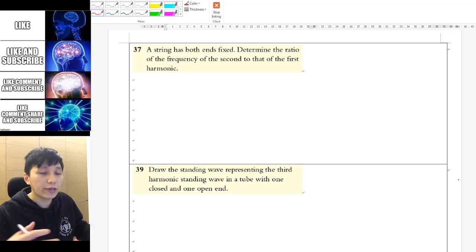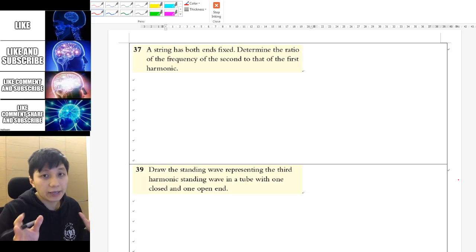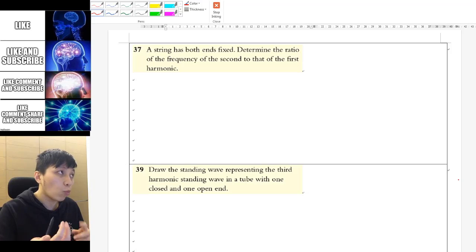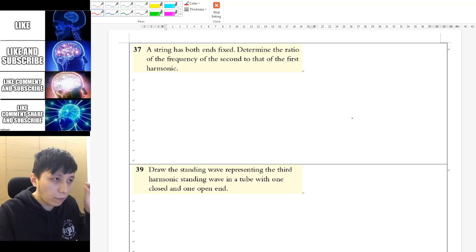Question 37. If you can recall the general case that we talked about earlier in the previous video, then you can remember for one open, one end, it will be the special case where you only have the odd number for the multiple of frequency. For both fixed end and open end, it will just be all the integers. So in this case, the second harmonic is going to be twice the first harmonic. So this is pretty much the answer.